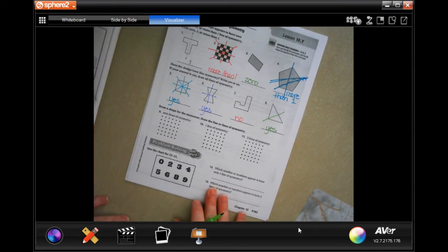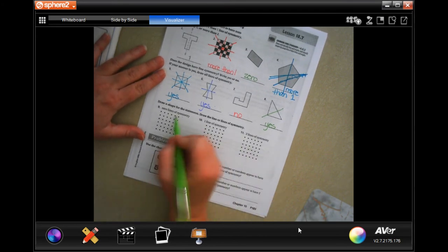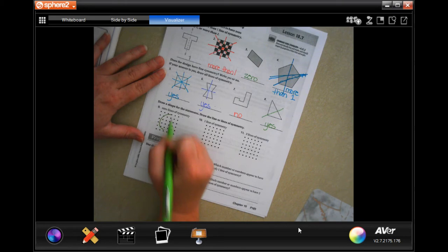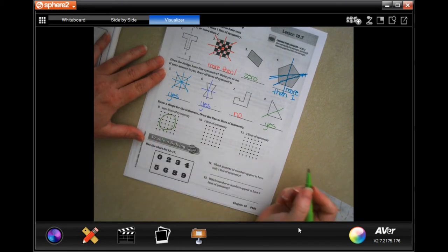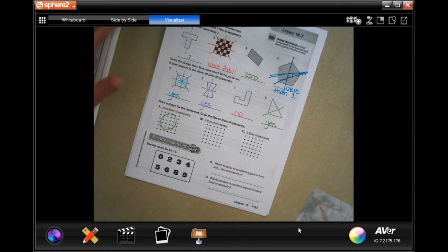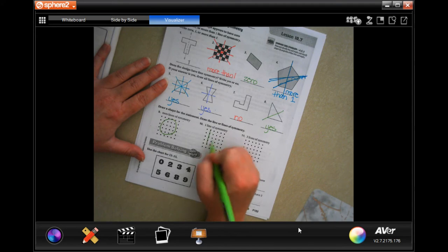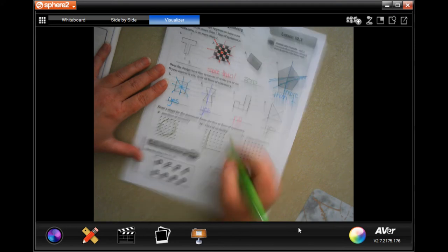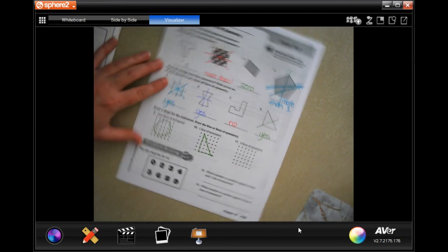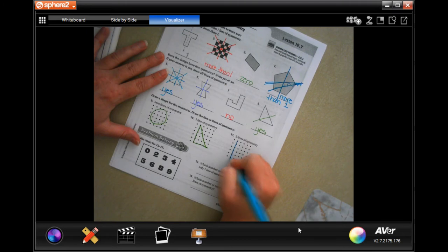All right, we are going to draw a shape to fit the statement. So zero lines of symmetry, boom. You could draw one of these, you could draw one of those, you could draw anything you want that's going to give you a line of symmetry. One line of symmetry, well that's a line of symmetry right there. So let's draw a triangle. Two lines of symmetry, well let's draw a rectangle. Then we would have there and there.